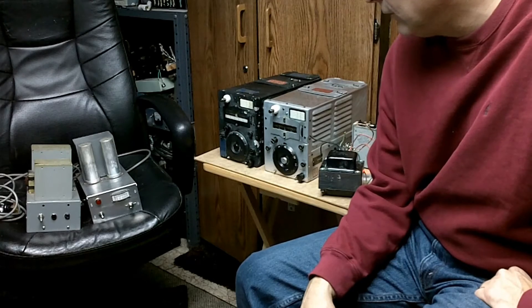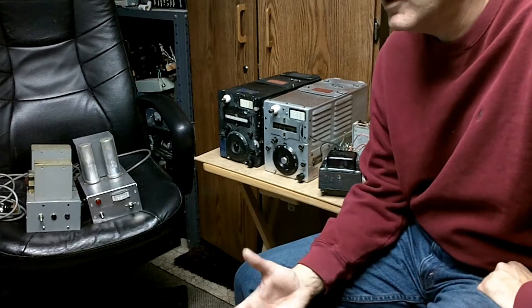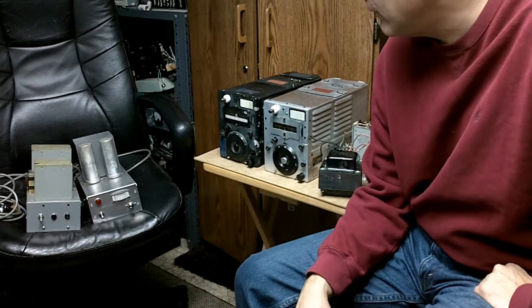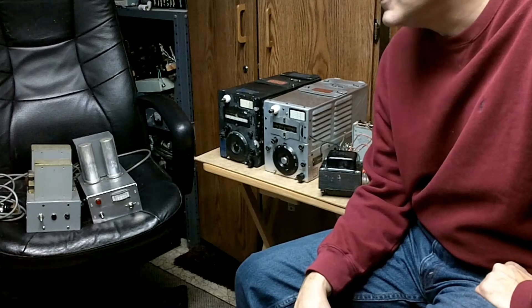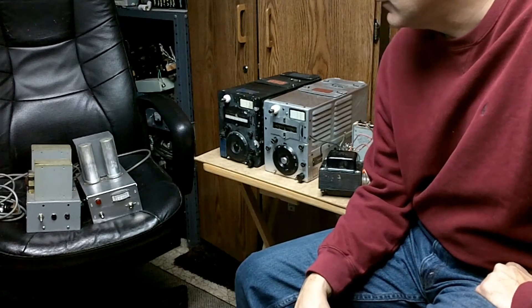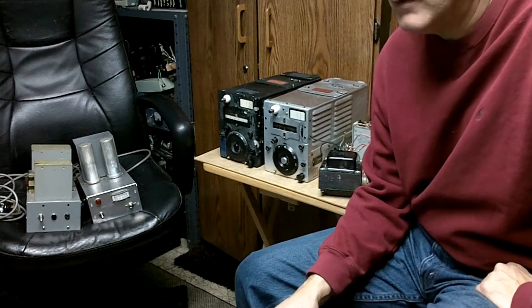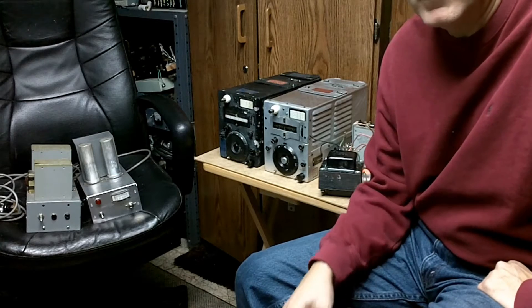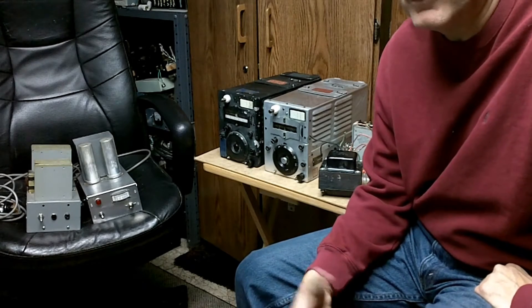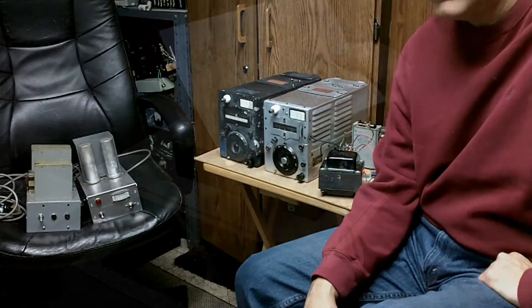The other thing you could do is look for a transformer on eBay or at a flea market that would provide five to six hundred volts center tapped at at least two or three hundred milliamps. I think that would be the basis for a good power supply. The 24 volts is not as big of a problem nowadays since there are so many well-regulated 24-volt power supplies around. A lot of these small switchers that are 24 volts at two amps are ideal for powering the filaments and relays in the ARC-5.